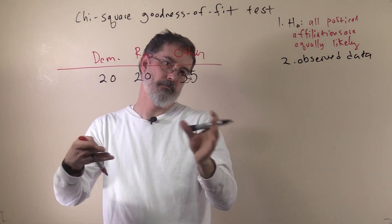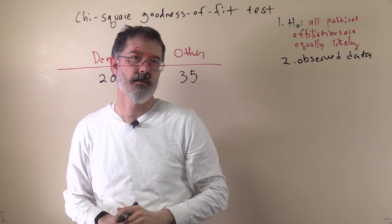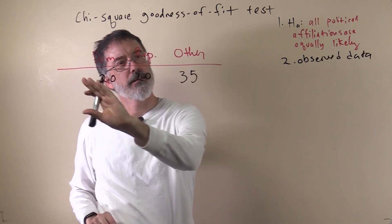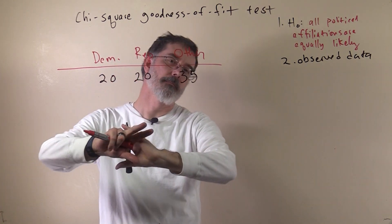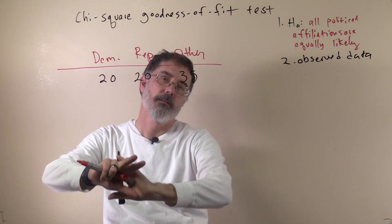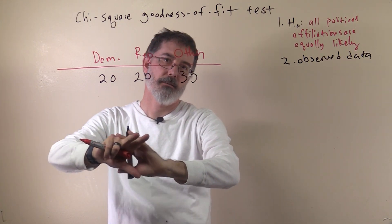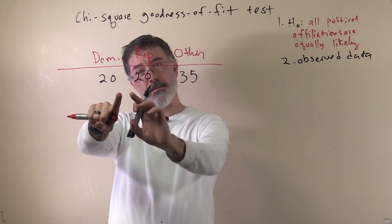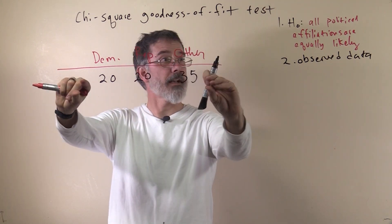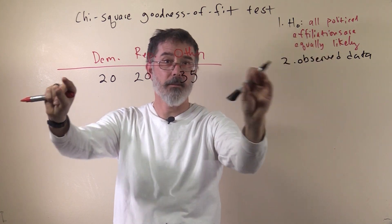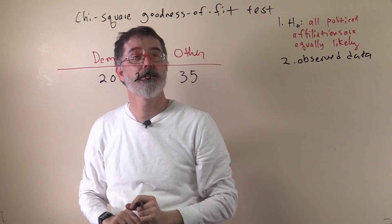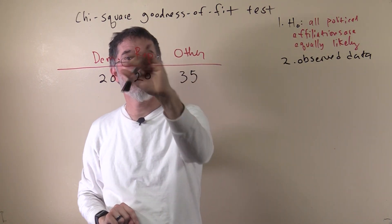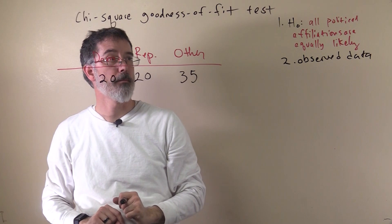Right off the bat we can tell this doesn't really fit our research hypothesis, but is this data so inconsistent with the null hypothesis that we can actually figure out that maybe SU students are more likely to be other than Democrat and Republican?